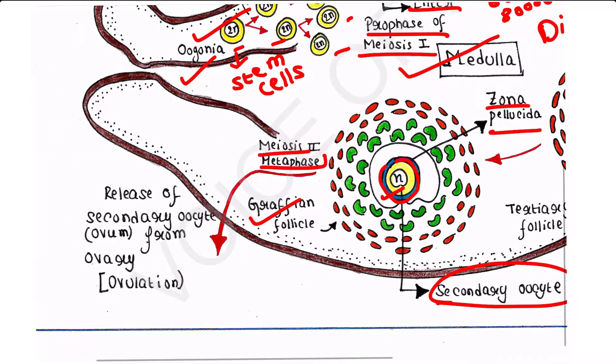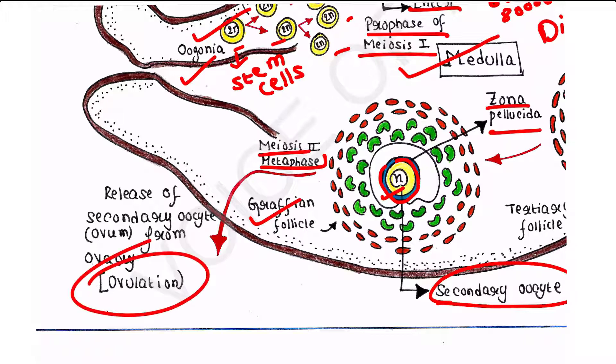Now the Graafian follicle ruptures to release the secondary oocyte, called ovum. It will release the ovum or secondary oocyte from the ovary, and this process is called ovulation.